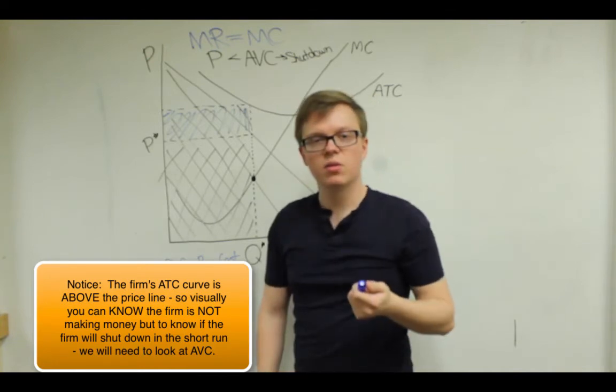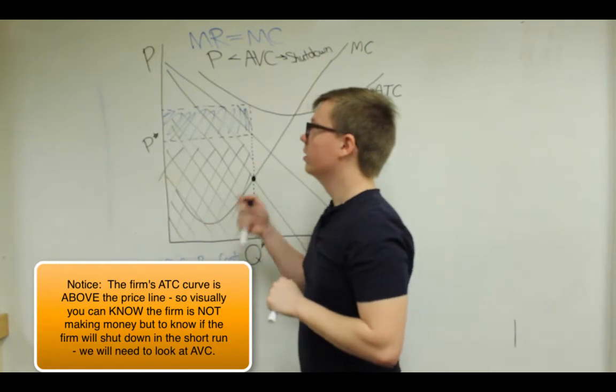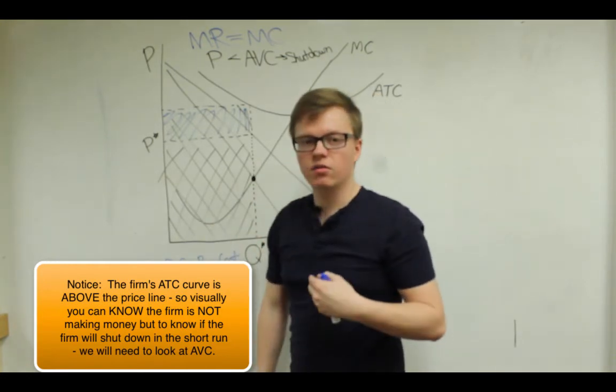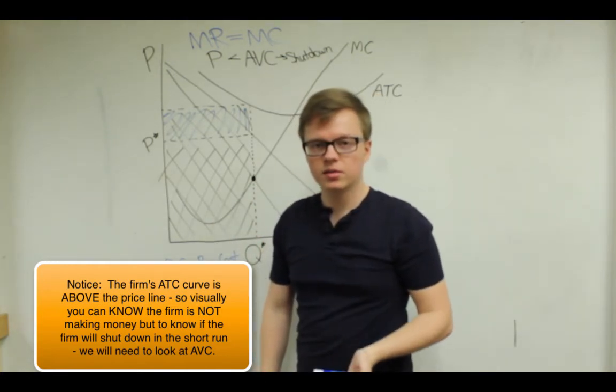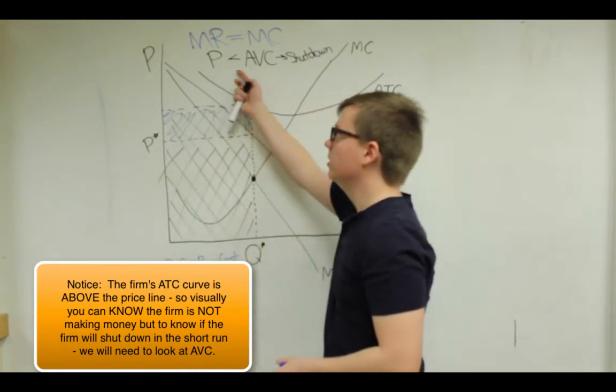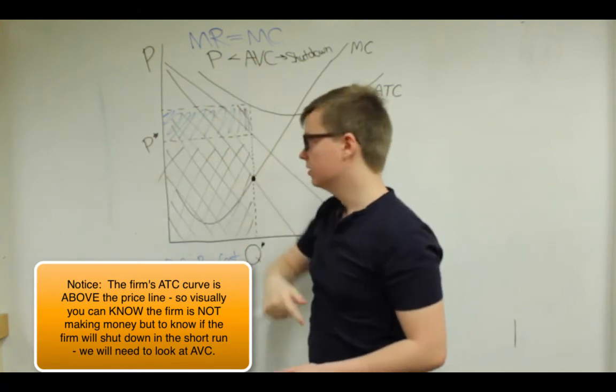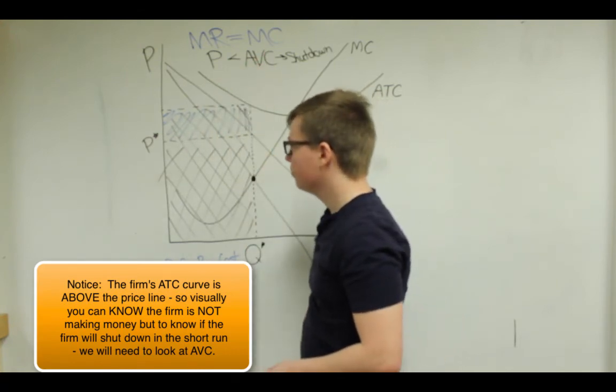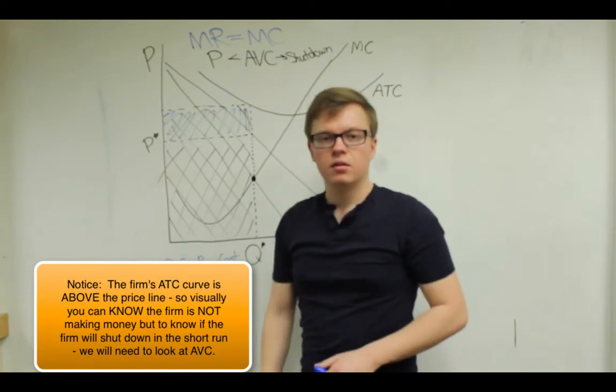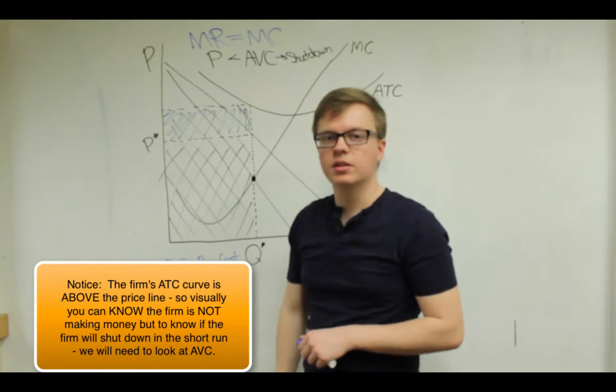And it may seem confusing why the firm would produce when they're losing money. But remember, as long as they're covering their variable costs, it makes more sense to lose money than to shut down. And that's why we have this condition for a shutdown decision. But basically, this is how you could read a graph for a monopoly or monopolistic competition.